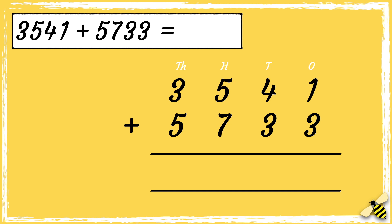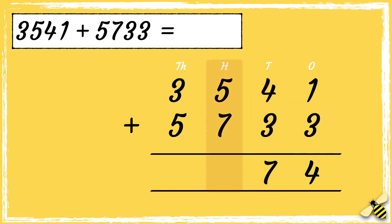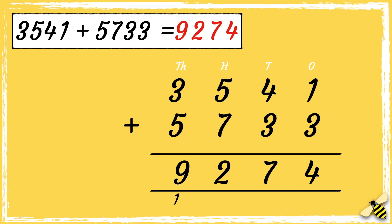Now that we're set up, we're ready to add. Pause the video to give you time to work out the answer. Press play when you're done. First we add the ones: one add three equals four. Then we add the tens: four add three equals seven. Then we add the hundreds: five add seven equals twelve. Then we have the thousands: three add five add one equals nine. So the answer is nine thousand two hundred and seventy four.